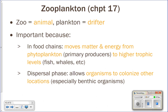Phytoplankton are tiny little plants, while zooplankton are animals that are plankton. Zooplankton are very important in the food chain because they act as a critical step. Phytoplankton are microscopic — not many things can filter them out and eat them directly. But zooplankton, like copepods, are small enough to eat phytoplankton and big enough to get eaten by other things. They make the energy in phytoplankton available to higher levels of the food chain. They also act as a dispersal phase.